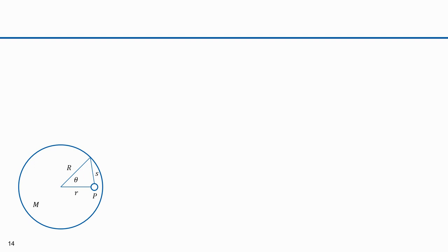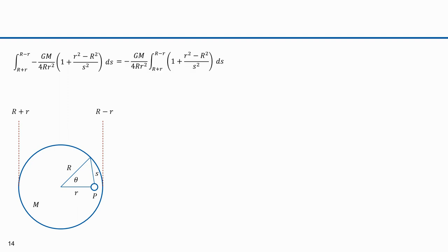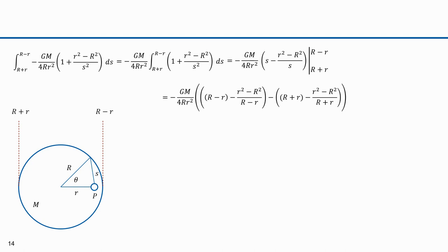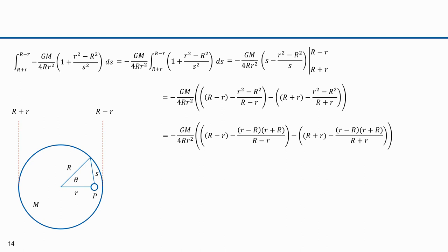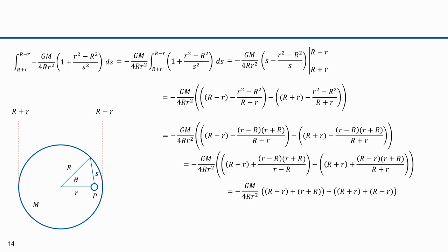Now I'll look at the case where the point is inside the sphere. Now the integral goes from R − r to R + r. Moving −GM/(4r²) outside, and evaluating the antiderivatives over that range, I expand (r² − R²) and find common terms in numerator and denominator. The result is 2r − 2r, which equals zero. So if you're inside a hollow sphere of mass M, you feel no gravitational force — the mass all around cancels out, and that's true no matter where you are inside the sphere, not just at the geometric center.